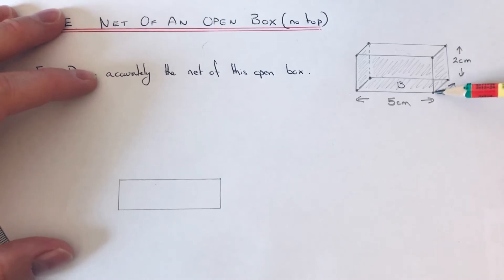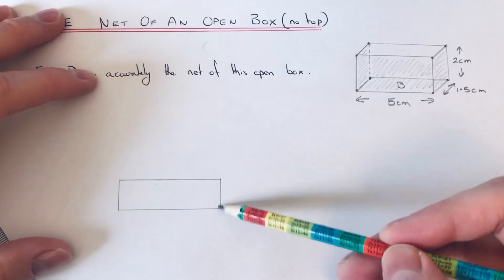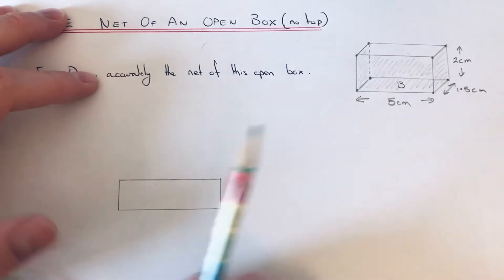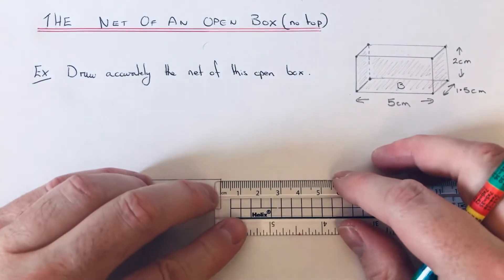The face on the right side is 1.5 by 2, so we've already got the 1.5 edge there, so we just need to go out 2 centimeters.